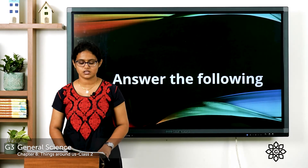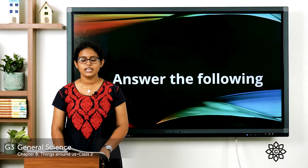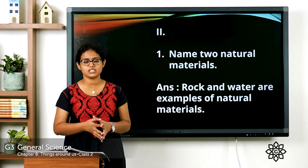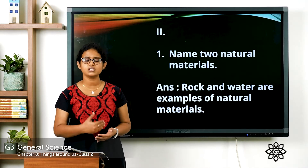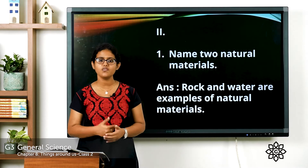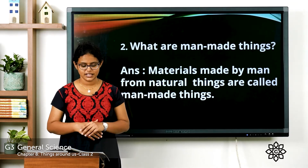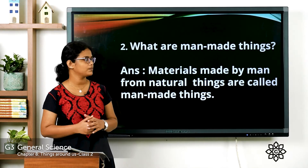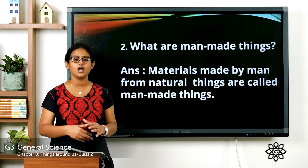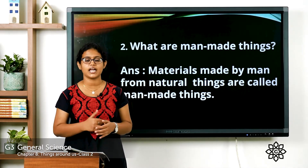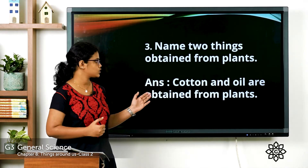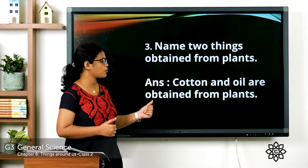Next section: answer the following questions. Question one — name two natural materials. Natural materials are materials that are found in nature. Examples are water and wood. Question two — what are man-made things? Materials made by people from natural things are called man-made things. They are not found in nature. Question three — name two things obtained from plants: cotton and oil are obtained from plants.